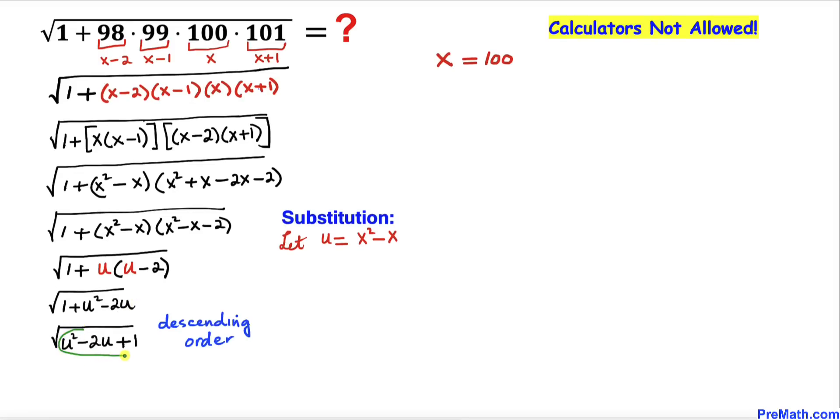In this next step I wrote the polynomial in descending order. Now let's recall this famous identity: a minus b whole squared. Therefore we can write this polynomial as u minus 1 whole squared. Here the square and square root undo each other, so we end up with simply u minus 1.